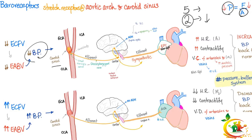The carotid sinus senses the decreased pressure and sends an afferent nerve — the small Hering's nerve, a branch of the glossopharyngeal nerve — to the center. The center is the medulla oblongata, specifically the nucleus tractus solitarius.